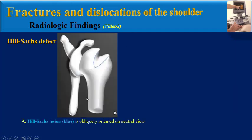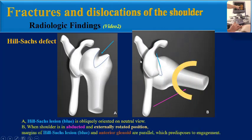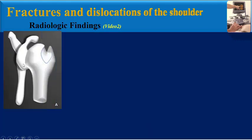This is an example of a Heel Socks lesion which is obliquely oriented in neutral view. When the shoulder is abducted and externally rotated, the margins of the Heel Socks lesion and anterior galanoid are parallel, which predisposes to engagement.